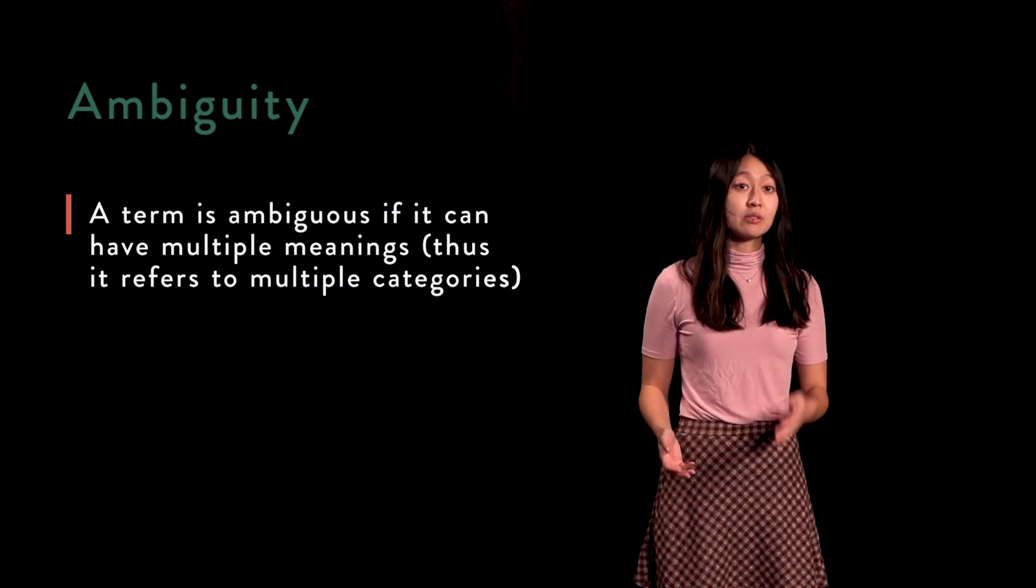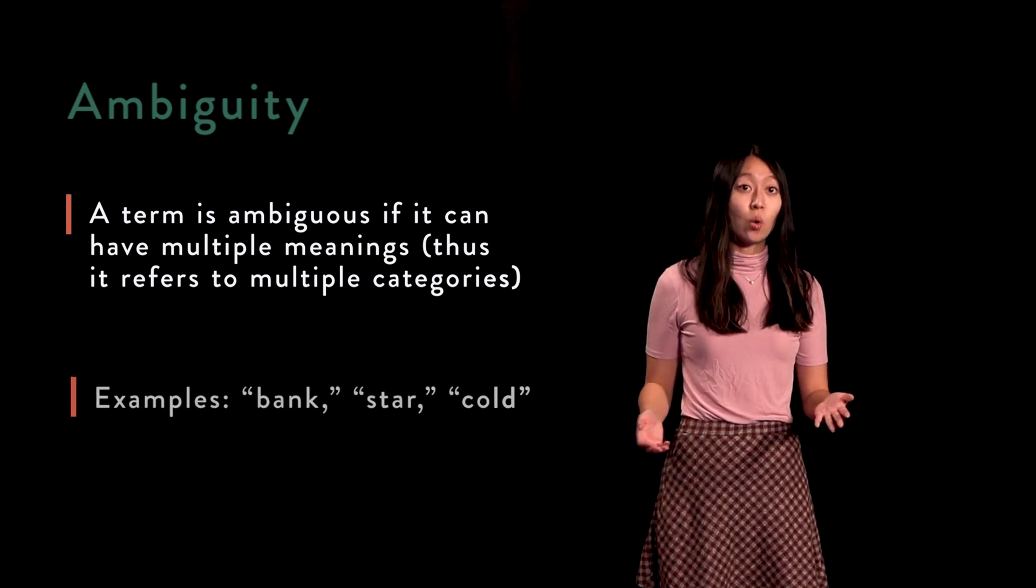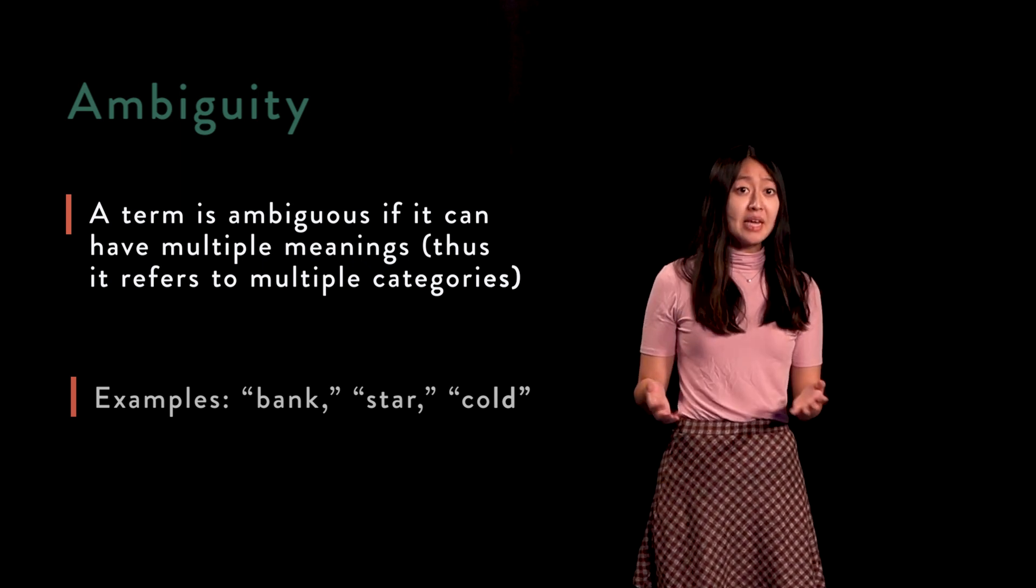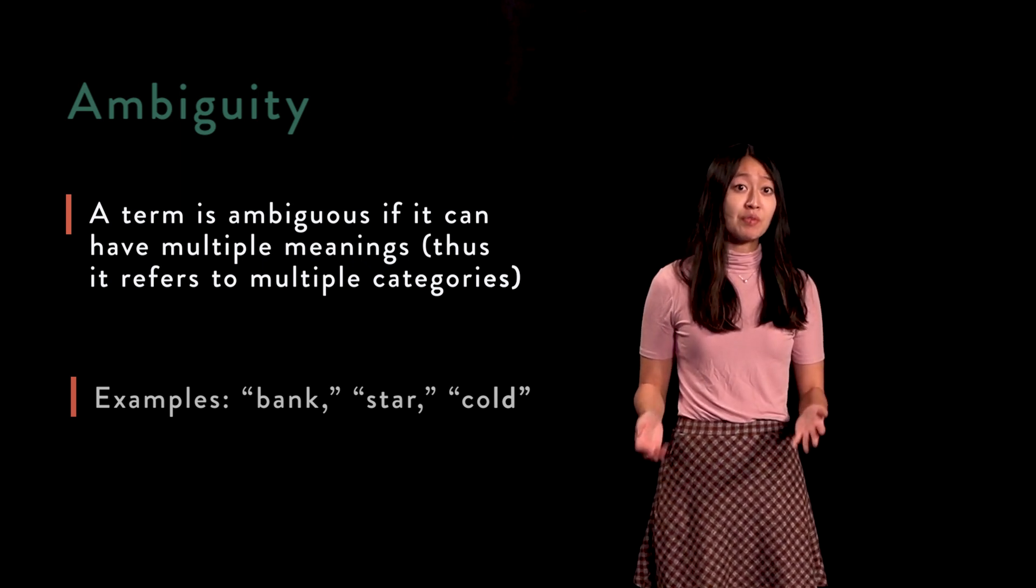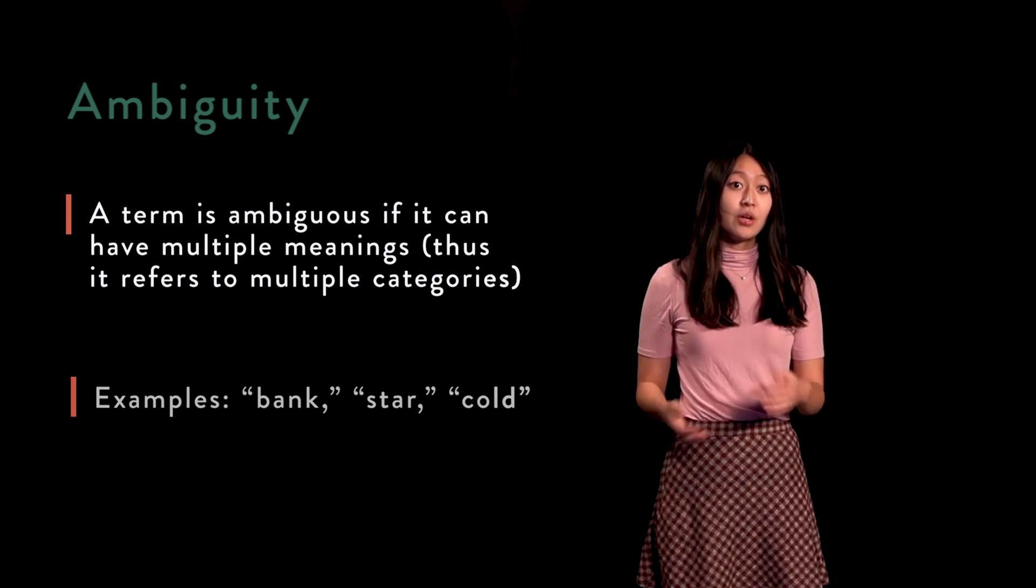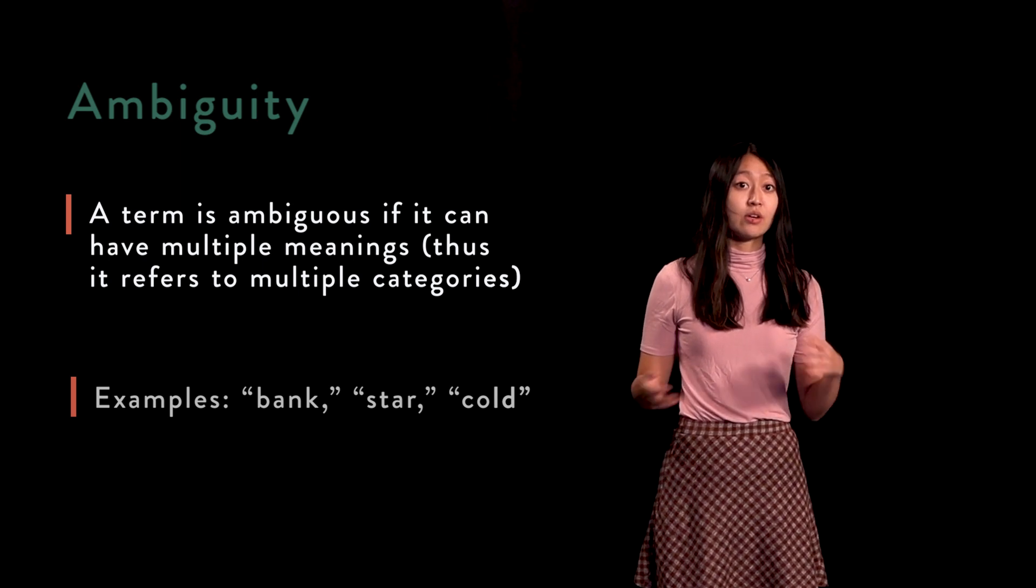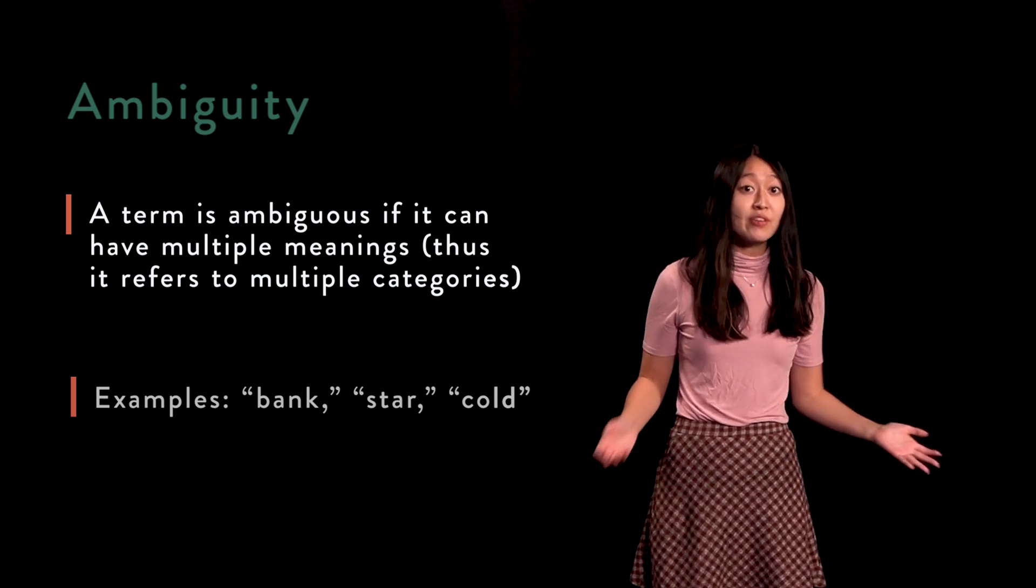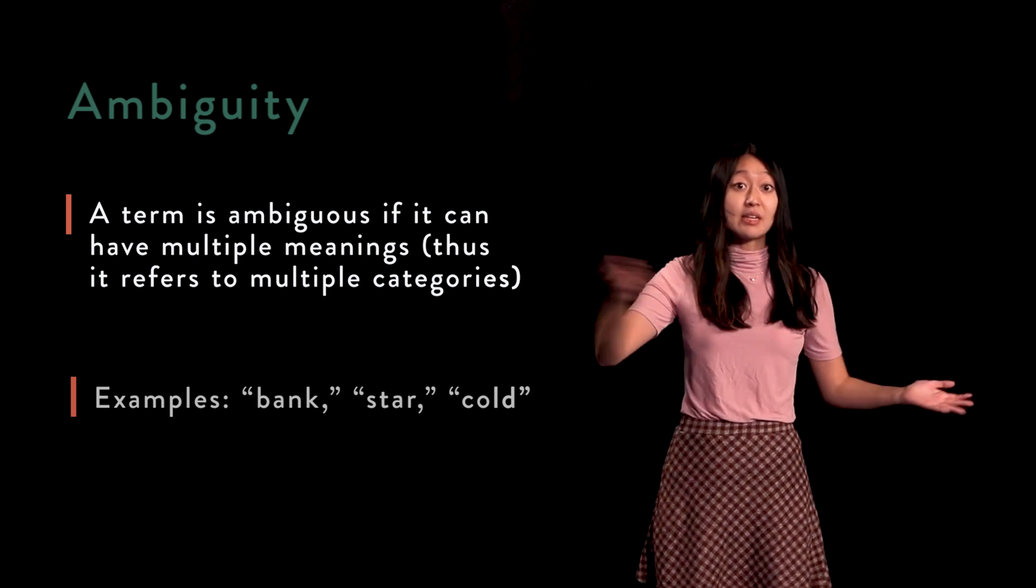Consider the following words: bank, star, cold, ruler. Each of them has more than one meaning. Bank could designate a category of all riverbanks or it could designate the category of all financial institutions we call banks. Notice that in both of the categories they are called banks but they have different members. So which category are we referring to when we say bank or that is a bank?